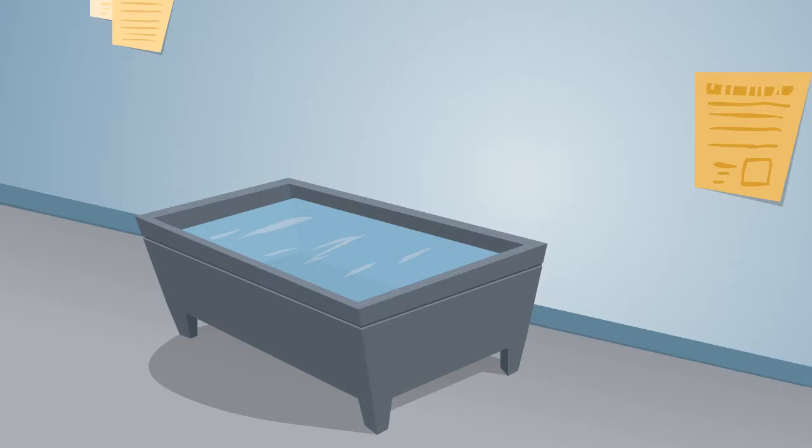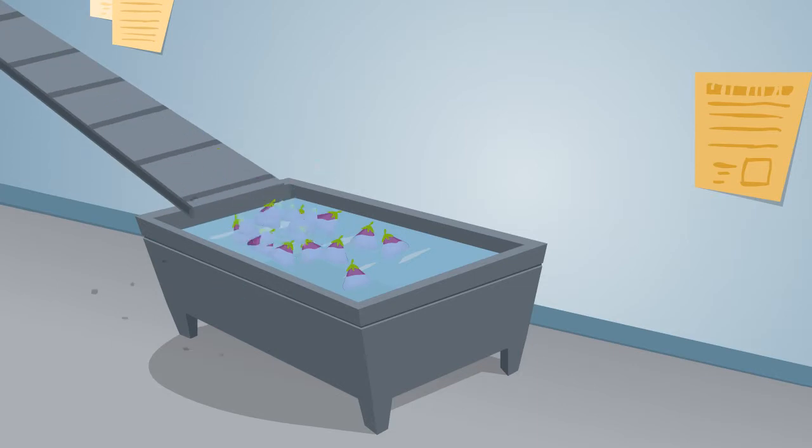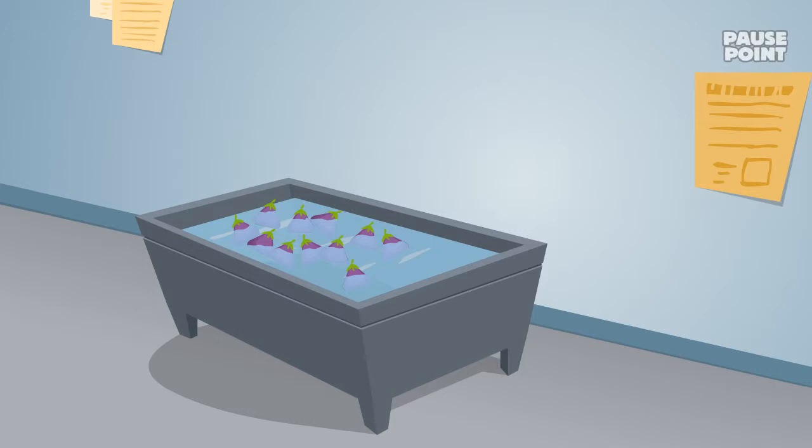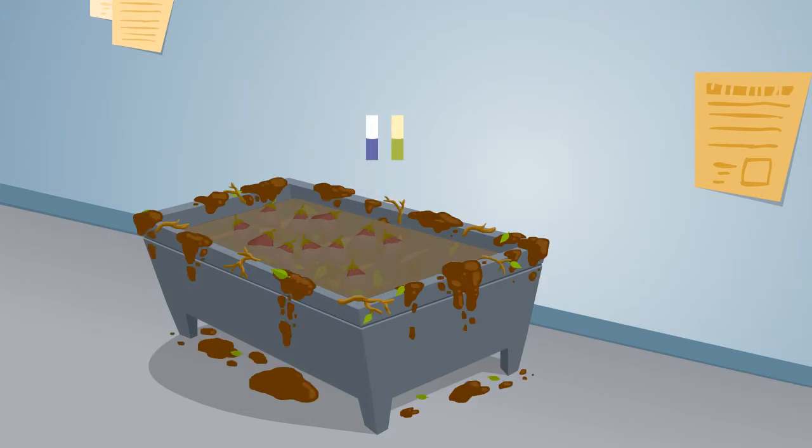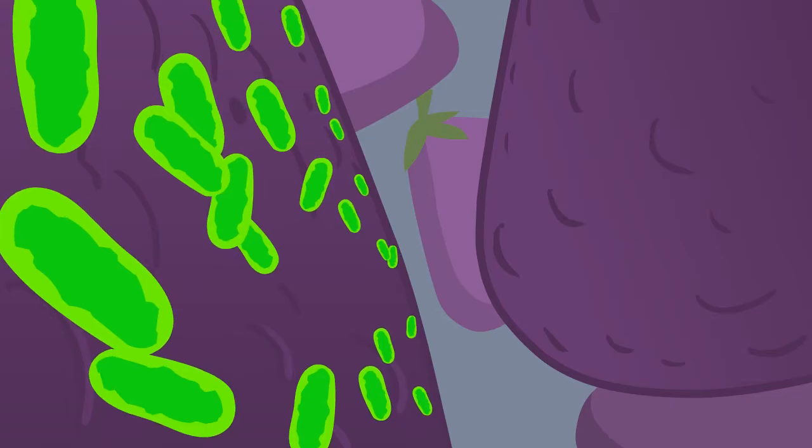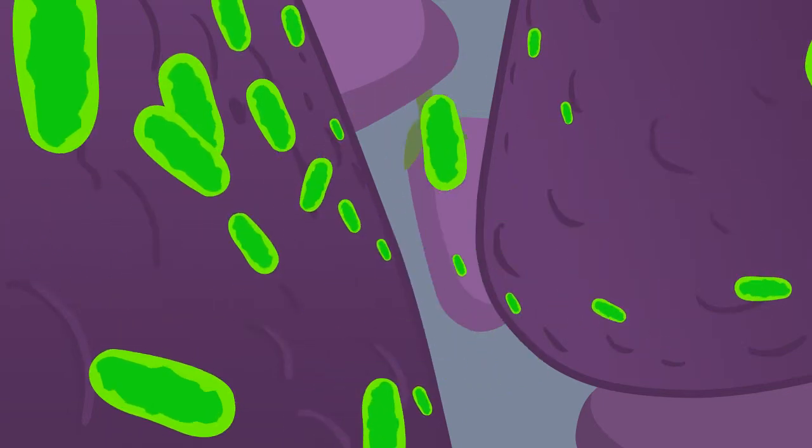Cross-contamination may begin at the dump tank. Produce enters the dump tank from bins or the pack line or is flumed in from a dump hopper. At this stage, bacteria or viruses may enter the dump tank and spread via water. Over time, buildup of plant matter and changes in pH and chlorine levels can increase the likelihood of cross-contamination in the dump tank.